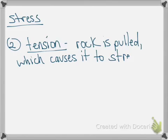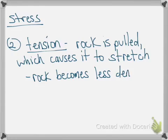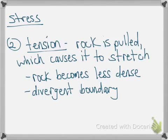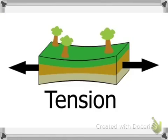Moving to our second form of stress: tension. While compression is when rock is pushed, tension is when rock is pulled or stretched out — like taffy when it gets stretched, it becomes less dense. The type of boundary where plates move apart is a divergent boundary, and that causes rock to get stretched and become less dense. Here's the diagram showing rock getting pulled apart with arrows, and as that happens, the rock becomes less dense.